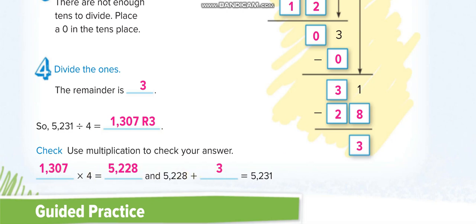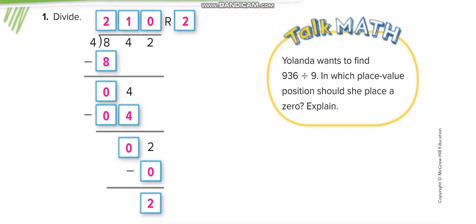This one now, again, 4 times 2 is 8, 8 minus 8 is 0. Bring the 4 down. 4 times 1 is 4, 4 minus 4 is 0. Bring the 2 down, and 4 times 0 is 0.